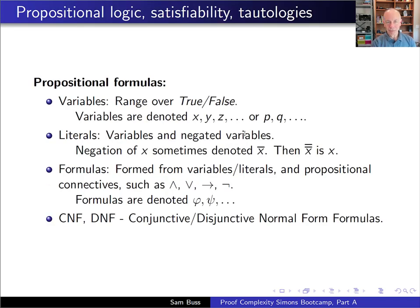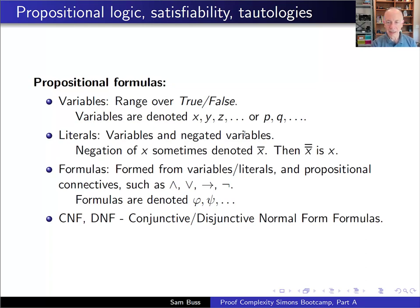To start with the introductory material, let's describe what propositional formulas are. For propositional formulas, sometimes called Boolean formulas, variables range over true-false values, and we denote variables x, y, z, or sometimes p and q. A literal is either a variable or the negation of a variable. We can write negation as 'not x' or with an overline, so overline x means the same as not x, and double overline x is just x.